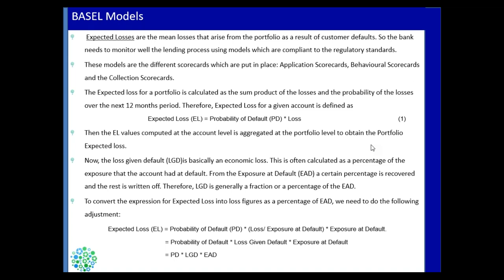The expected loss is calculated as Probability of Default multiplied by Loss Given Default. The loss is the amount we think we will lose, and PD is the probability that a customer will go into default. For example, say I am holding a credit card account with a bank.